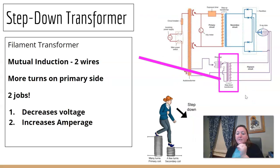And we're going to go down to the bottom one, the step down transformer. Again, two wires, mutual induction. It's going to decrease my voltage, but it increases my amperage. Sometimes this step down transformer is also called the filament transformer. If you think filament, thermionic emission, it's right next to my MA selector. They kind of go together. If you look at the windings here, there's more windings on the primary side than the secondary side. So we're stepping down.